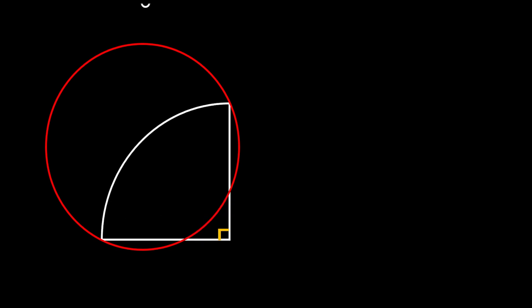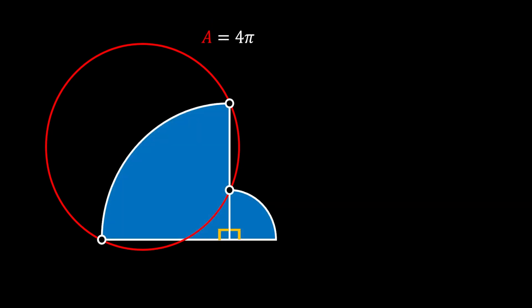Let's start with the red circle and construct a quarter circle so that its corners are touching the circumference of this red circle. From the right intersection point of the circle and our quarter circle, we can construct another quarter circle so that it is horizontally aligned with our bigger quarter circle. If the area of our red circle is equal to 4π, is it possible for us to find this blue shaded area that contains these two circular segments?